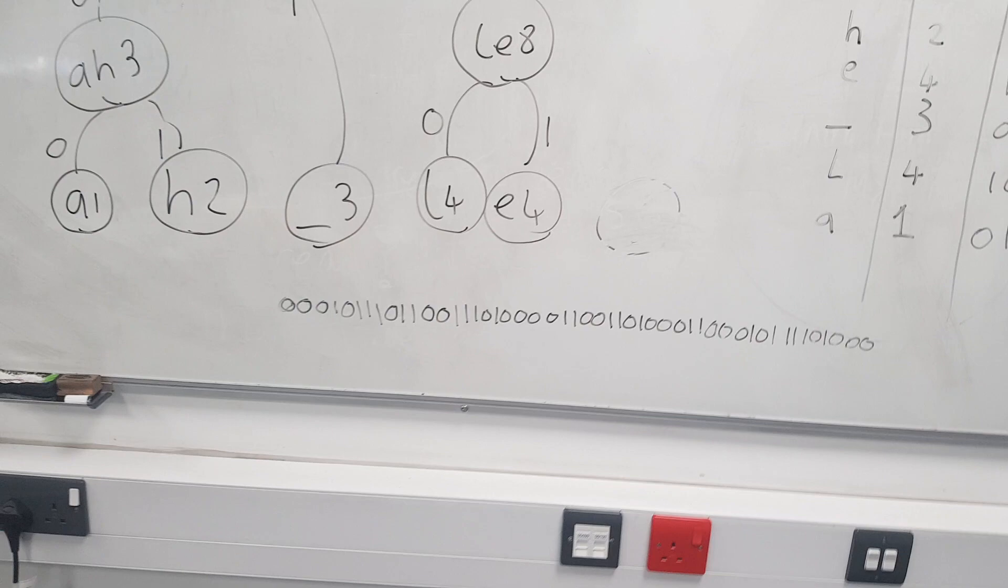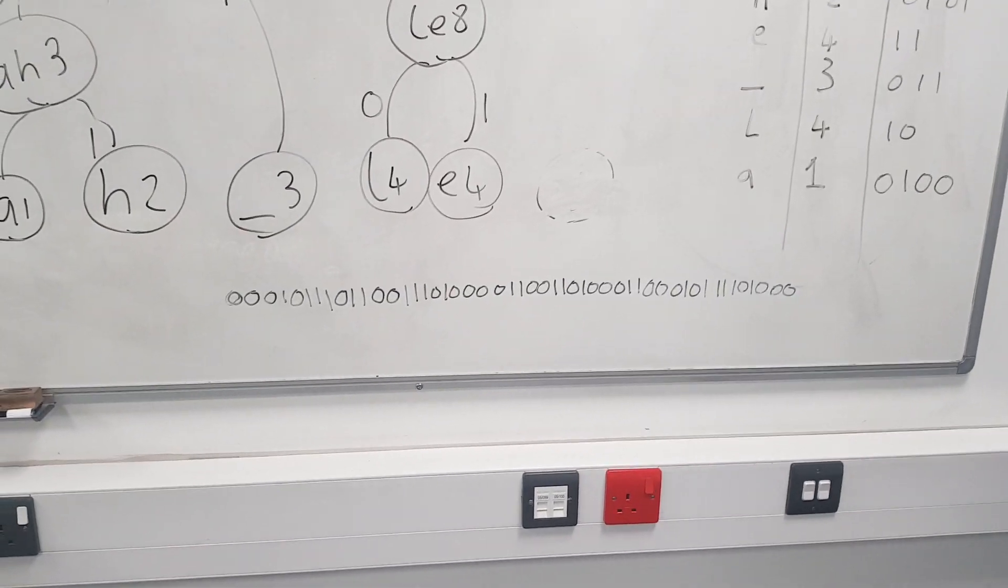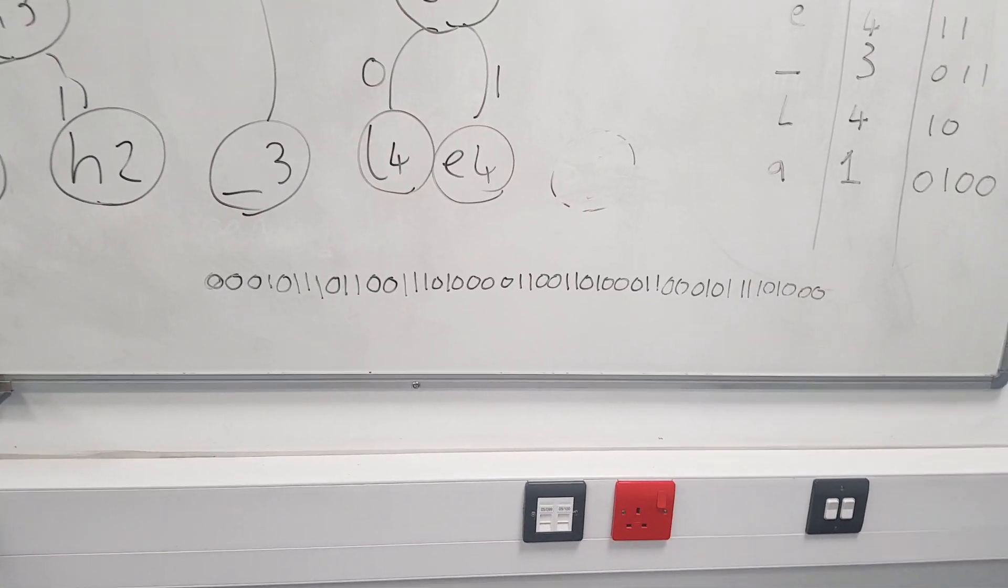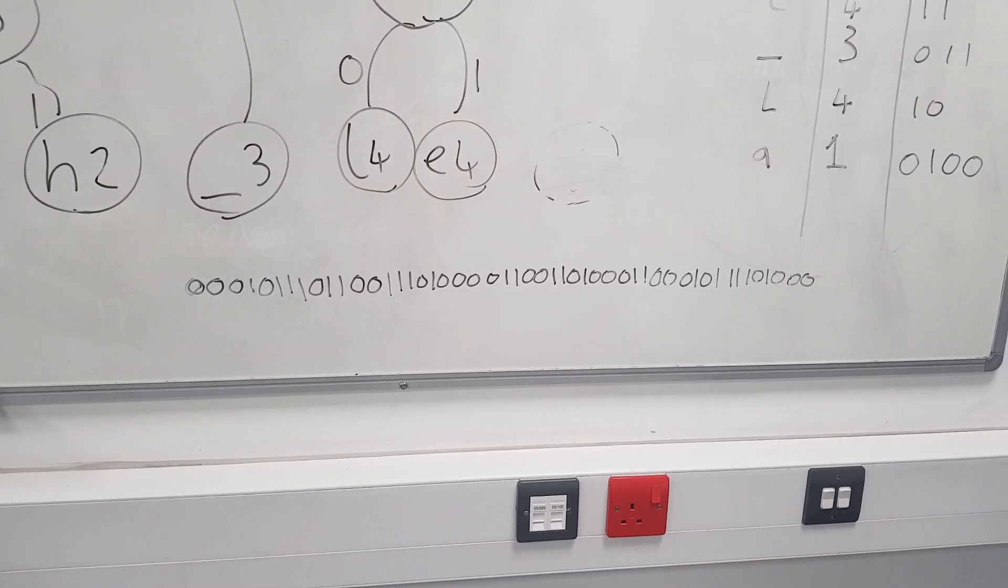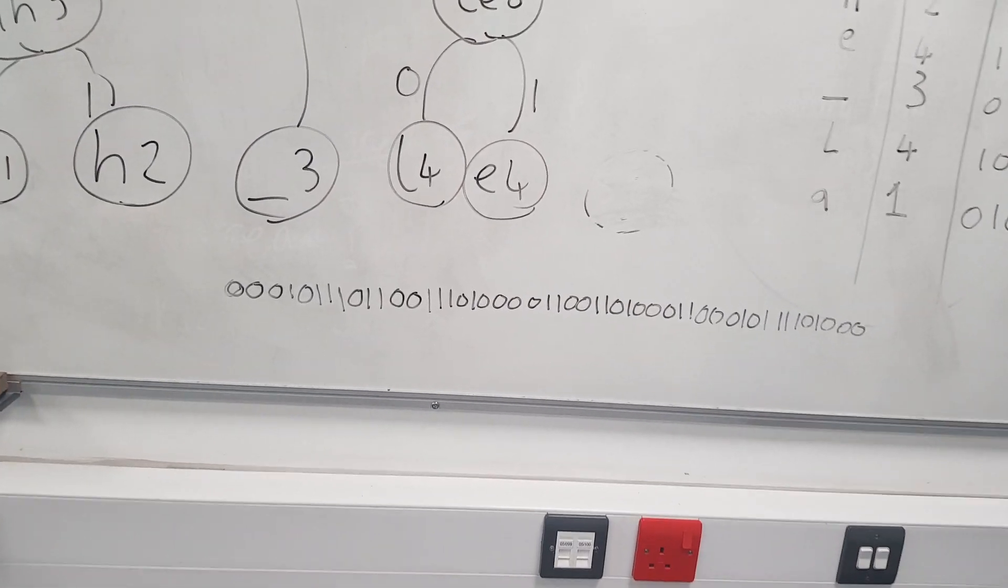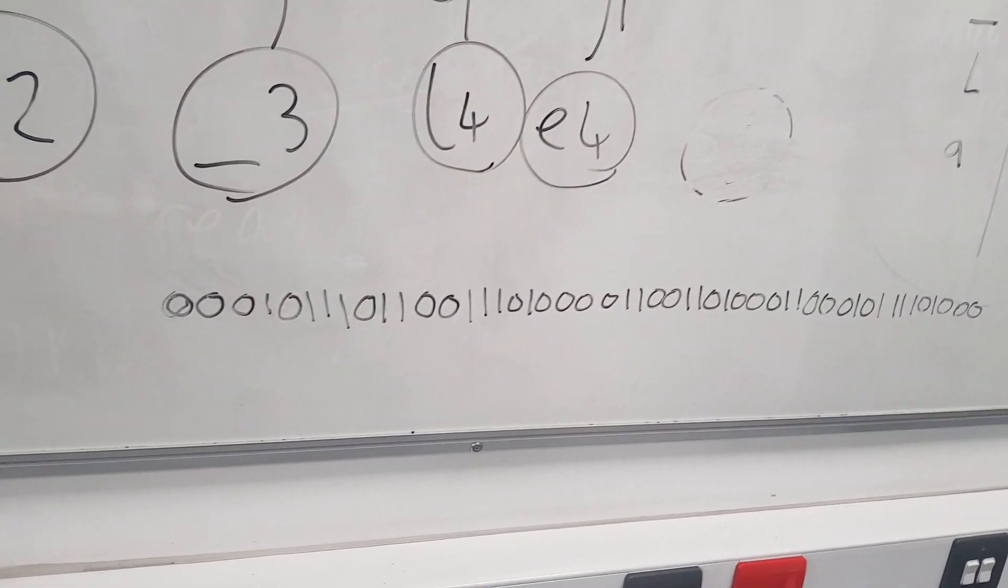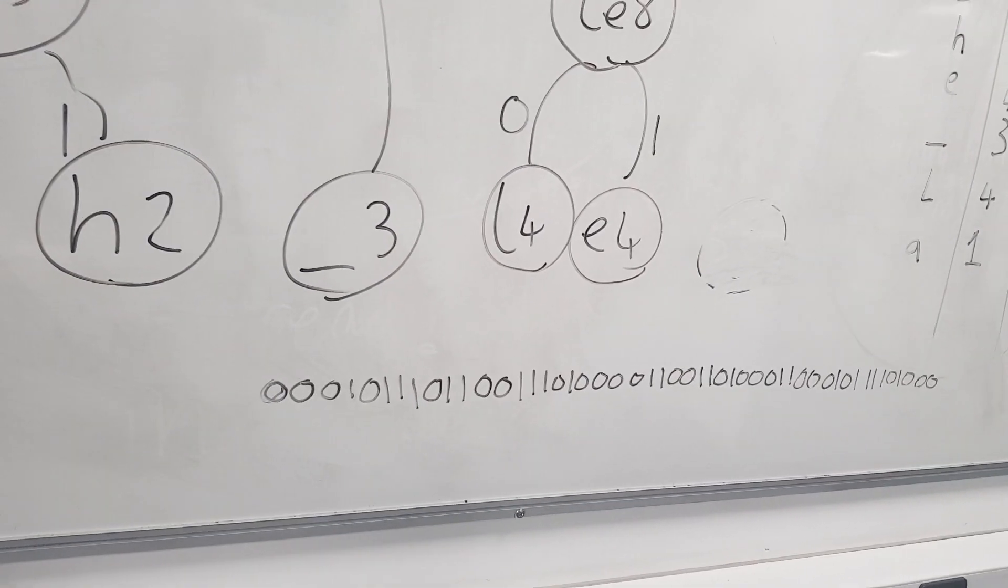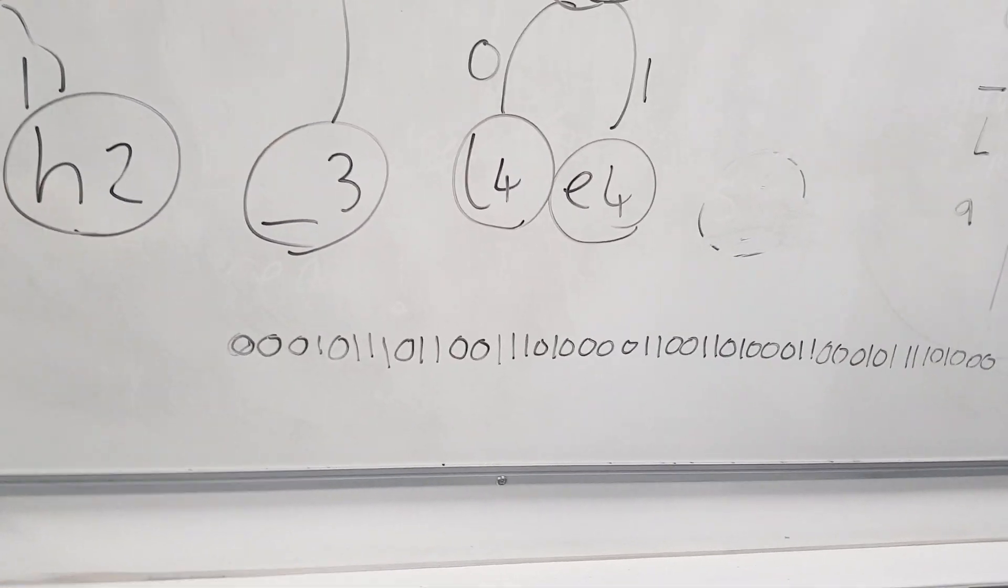So this is the bit where most people get a bit confused and think, well okay if we're not using a fixed length bit to store our letters, how do we know where one letter starts and when one letter ends? And the simple answer to the question is that we don't need to know that because every single code has got a unique prefix.